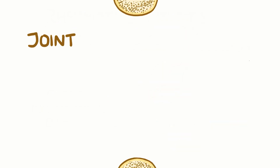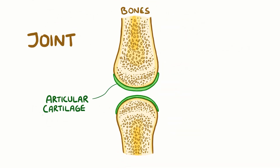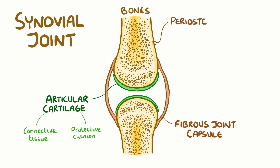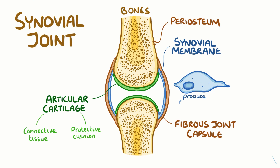A healthy joint typically has two bones covered with articular cartilage at the ends. Articular cartilage is a type of connective tissue that acts like a protective cushion — a lubricated surface for bones to smoothly glide against. One type of joint, like the knee joint, is called a synovial joint. A synovial joint connects two bones with a fibrous joint capsule that is continuous with the periosteum, or the outer layer of both bones. The fibrous capsule is lined with a synovial membrane that has cells producing synovial fluid and removing debris. The synovial fluid is normally a viscous fluid, like the jelly part of a chicken egg, and it helps to lubricate the joint.